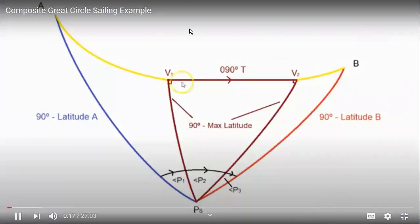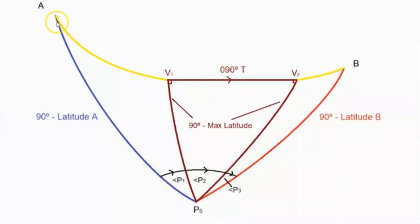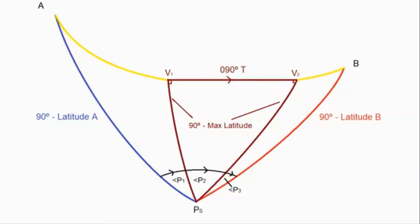First, we need to know what composite great circle sailing is. It is a mixture of great circle and parallel sailing — a parallel of latitude is your great circle constraint. It is also a mixture of rhumb line and great circle sailing. Once you reach the vertex, you use rhumb line from vertex to vertex, then great circle again. Or you restrain a great circle sailing to one limiting latitude as a rhumb line — that is composite circle sailing.